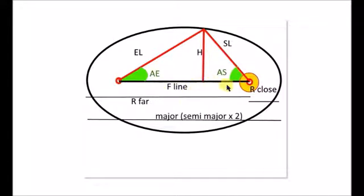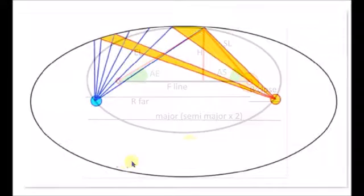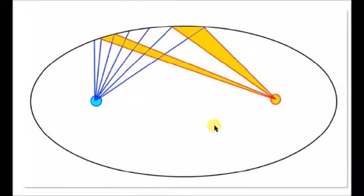When the Earth is here, this is the empty focus and this is the Sun focus. I call this the F line - the empty focus line and the Sun focus line. This will be the angle of the empty focus, and this will be the angle of the Sun or the angle of the location.